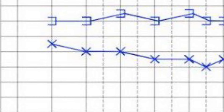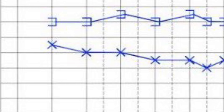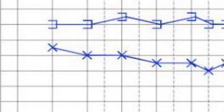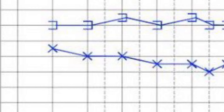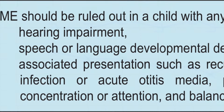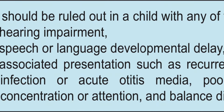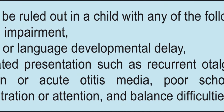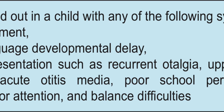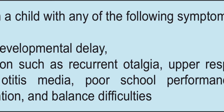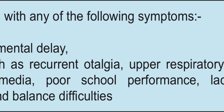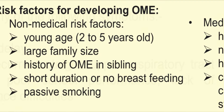Hearing loss in OME is typically conductive and ranges from mild to moderate. Audiometry can be performed to quantify this hearing loss, which often shows a mild hearing loss in the affected ears. Audiometry is especially useful in children who present with speech delays or learning difficulties due to hearing impairment.